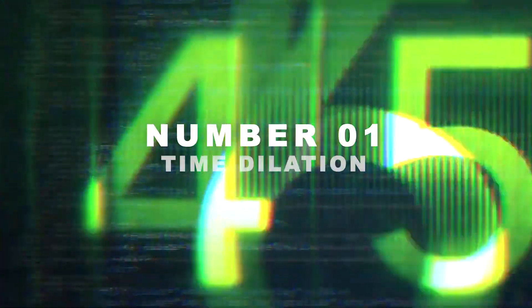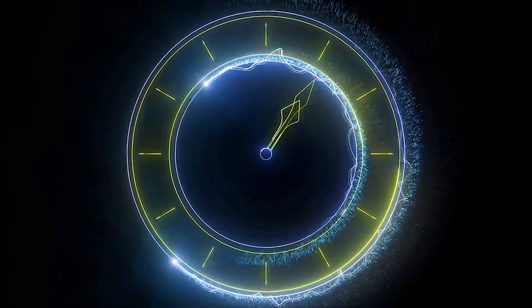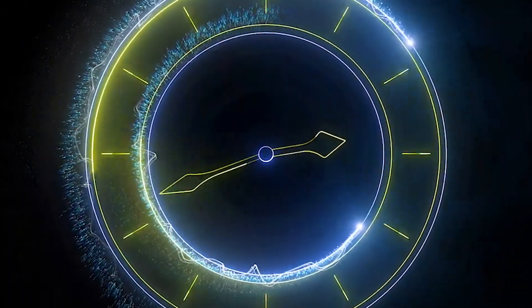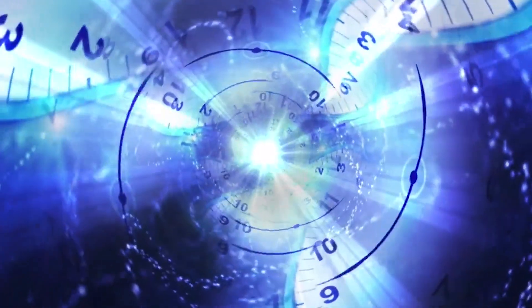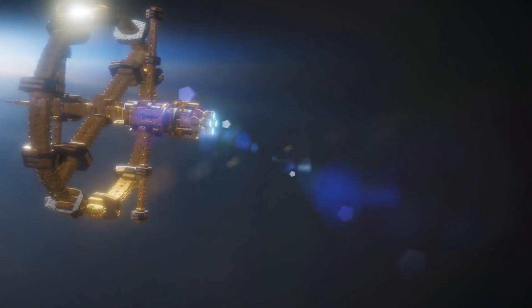Number 1. Time Dilation. In the fascinating world of Einstein's theory of relativity, time is not an absolute constant. Instead, it can be influenced by factors like gravity and velocity, leading to a mind-bending phenomenon known as time dilation. According to this concept, as objects move at significant fractions of the speed of light or experience strong gravitational fields, time for them passes differently compared to stationary objects.